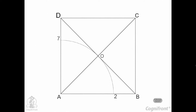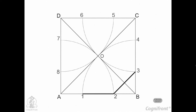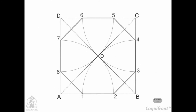With centers C and B and radius AO, draw arcs to obtain the remaining points. At last, we'll join the points 1, 2, 3, 4, 5, 6, 7, and 8, thus completing the octagon.